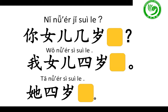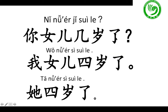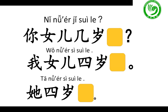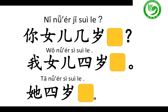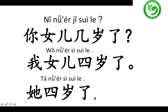Make a note: you can say 你女儿几岁了 or without 了 at the end — both are correct. The answer can be 我女儿四岁了, or 她四岁了. You can also skip the final 了: 我女儿四岁 or 她四岁. Both ways are okay.